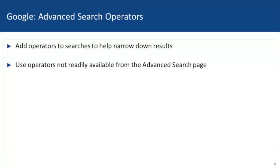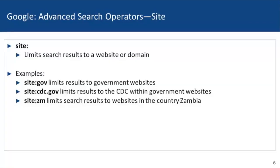In the following slides I'll show you how to use Google's advanced search operators to refine your results — some of these operators aren't available from the advanced search page. The search operator site: limits search results to a website or domain. For example, site:gov limits results to government websites. To narrow results further to the CDC within the government website, try using site:cdc.gov.